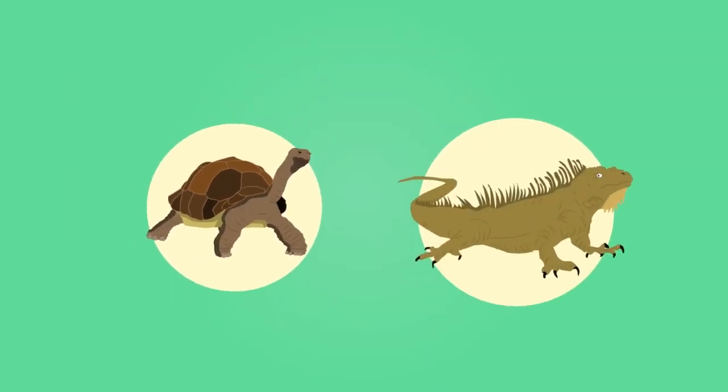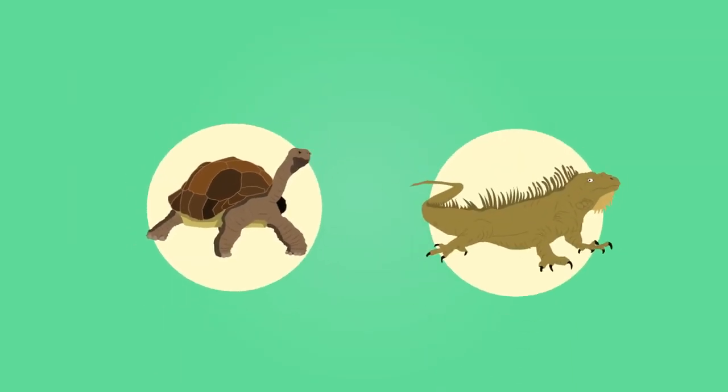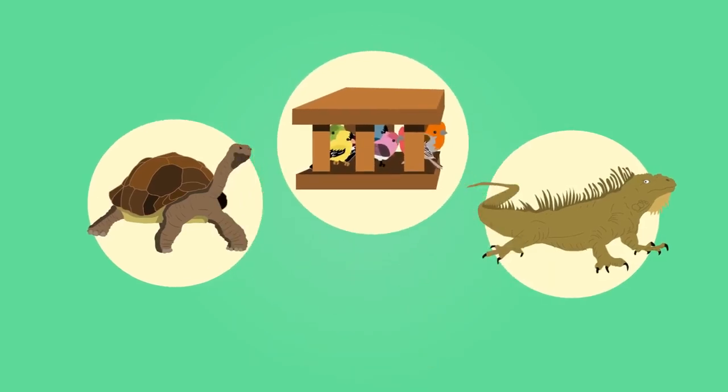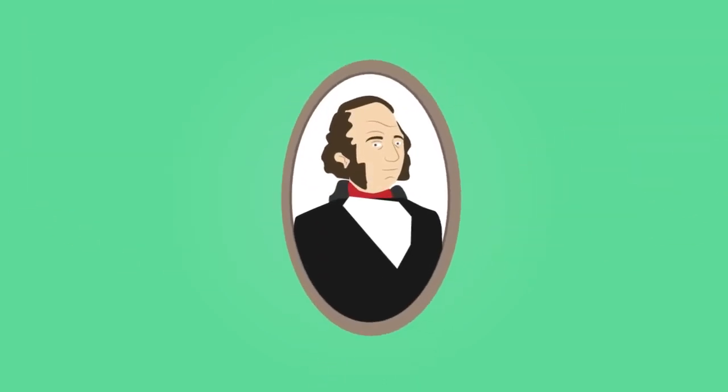As well as giant tortoises and marine iguanas, Darwin collected and preserved a variety of different songbirds called finches. Upon returning to the UK, he examined them together with ornithologist John Gould and made some fascinating discoveries.